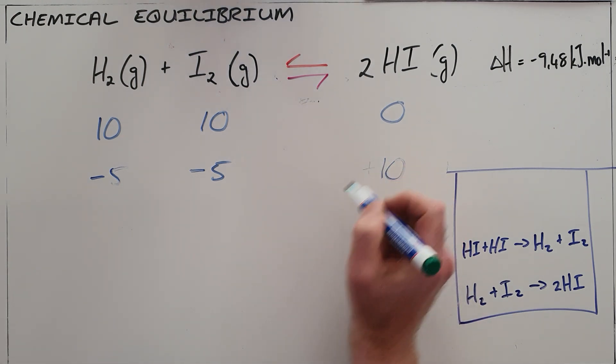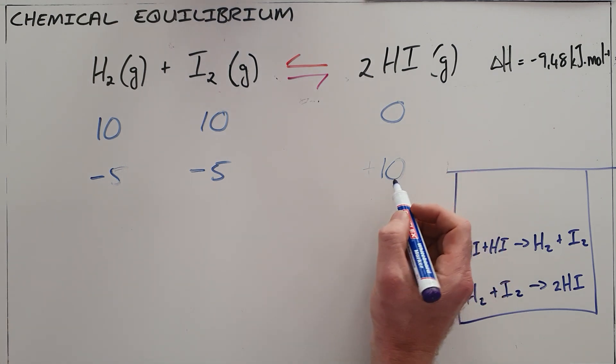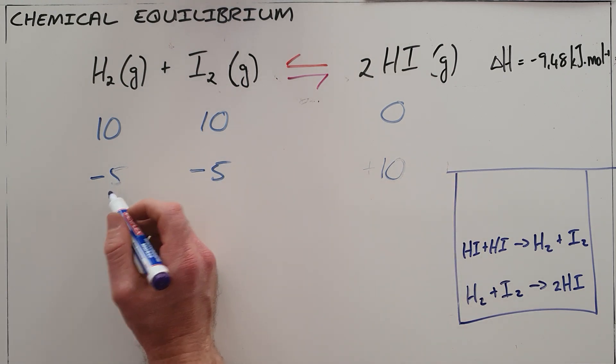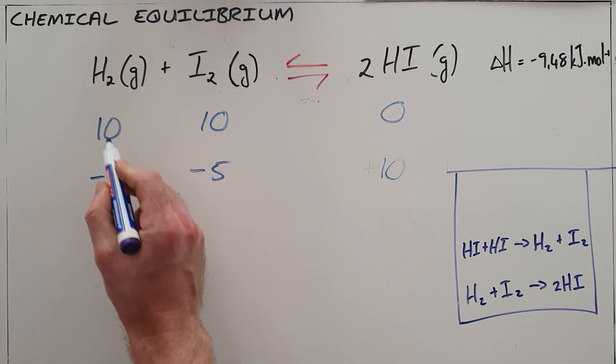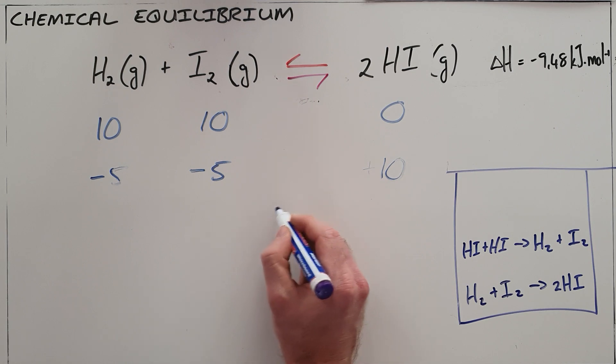Now at this point, there are enough hydrogen iodide molecules for the reverse reaction to start, which means that now we have hydrogen iodide that is being used up to produce hydrogen and iodine. At the point where the same amount of hydrogen and iodine are being converted into hydrogen iodide, we say the rate of the forward reaction...